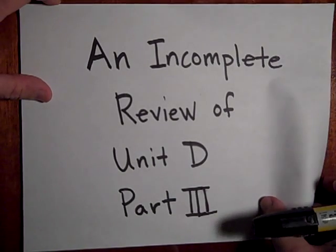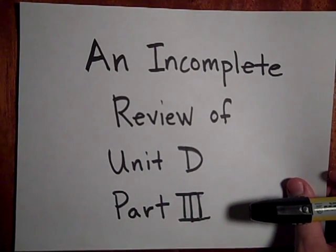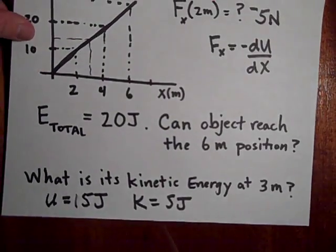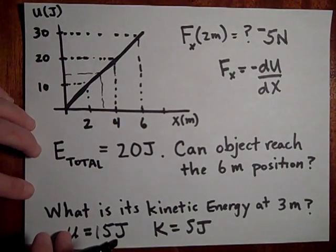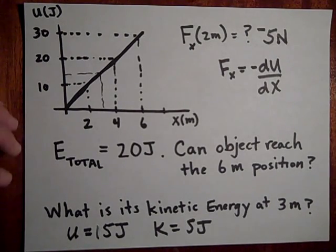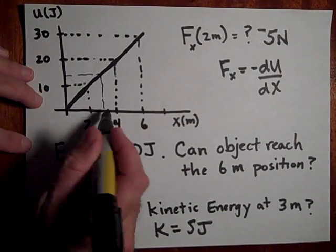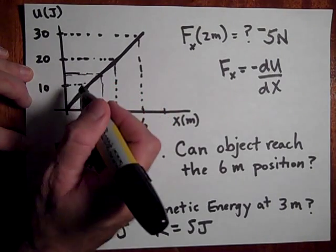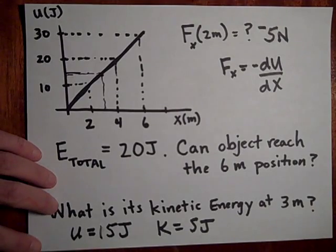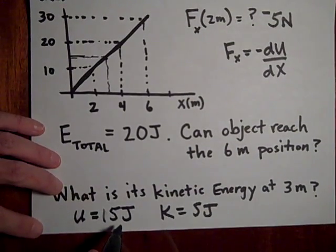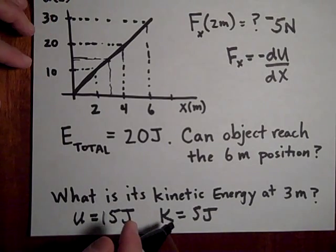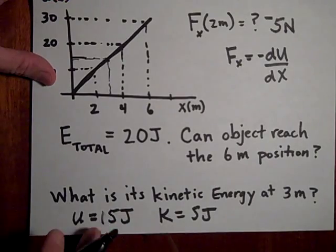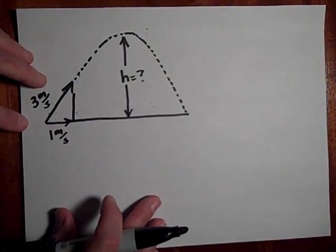Here's part three of the unit review — looks like there's going to be four parts. I'm going back to the last question because I rushed it. This object has a total energy of 20 joules. At three meters, you can read off 15 joules of potential energy, so it must have a kinetic energy of 5 joules. That was the answer to the last question in part two.